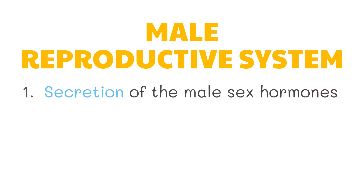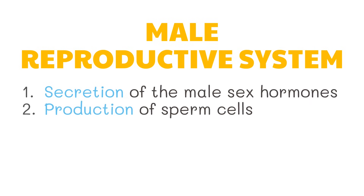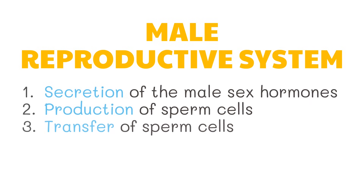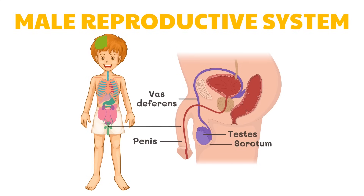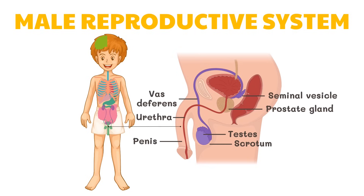Let's begin with the male reproductive system. The male reproductive system performs the following functions: secretion of the male sex hormones, production of sperm cells, and transfer of sperm cells. The male reproductive system includes the testis, scrotum, penis, vas deferens, urethra, seminal vesicle, and prostate gland. The male gonads are the testis hanging in the scrotum.